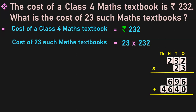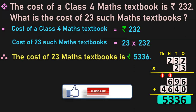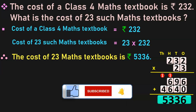2 into 2 is 4, which will move to the 1000's place. Now add these two products: 6 plus 0 is 6; 9 plus 4 is 13, 3 carry over 1; 1 plus 6 is 7; 7 plus 6 is 13, 3 carry over 1; 1 plus 4 is 5. The product is 5,336. Therefore the cost of 23 maths textbooks is Rs. 5,336.